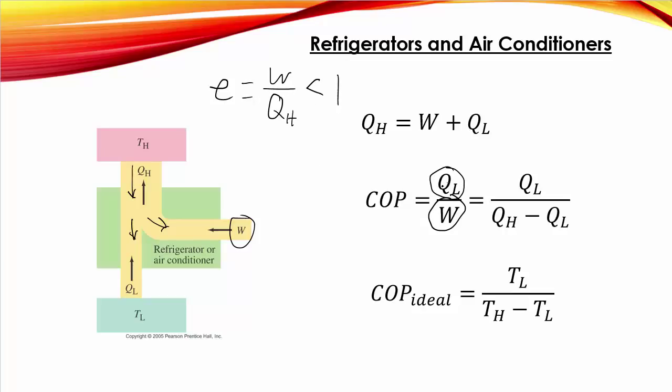And so this could come out to be greater than 1. So we don't like to call it an efficiency because we don't like to think of this as a percentage. It's just a number that's useful to calculate. So COP stands for Coefficient of Performance.